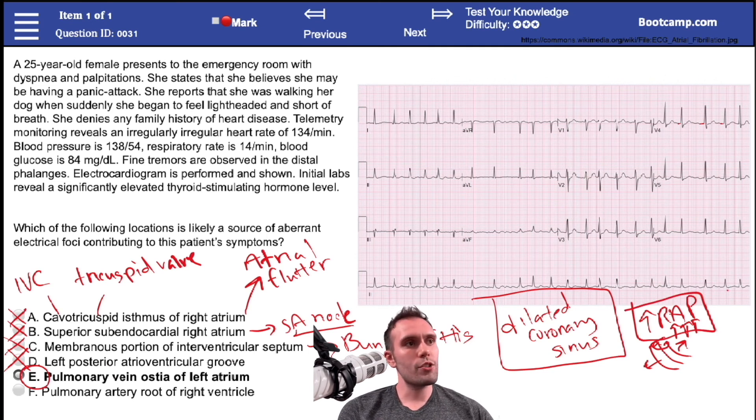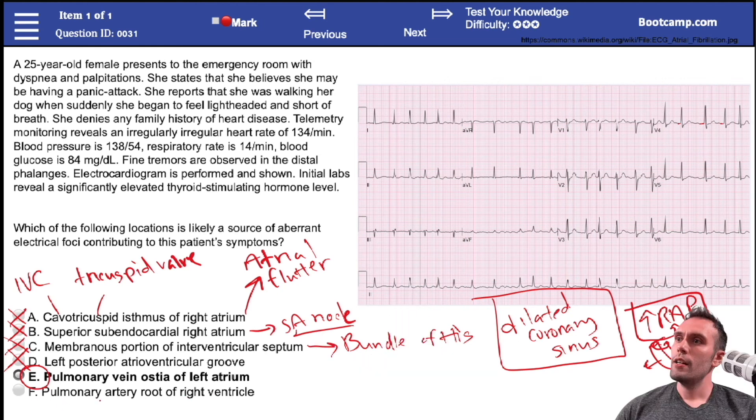Finally, F - pulmonary artery root of right ventricle. This is the area that we can run that Swan-Ganz catheter, get the pulmonary capillary wedge pressure. But again, this is not the area we would be ablating.